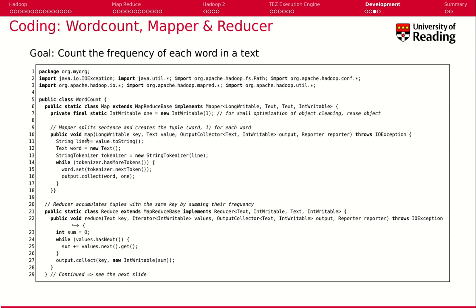We get this text and we tokenize it, which is a line of text. Every time we get a word, we output the word and the number one. It has to use these awkward types like IntWritable because these data types need to be serialized, communicated, and stored inside files. That's why you can't use a native Java object — but these objects here are serializable.